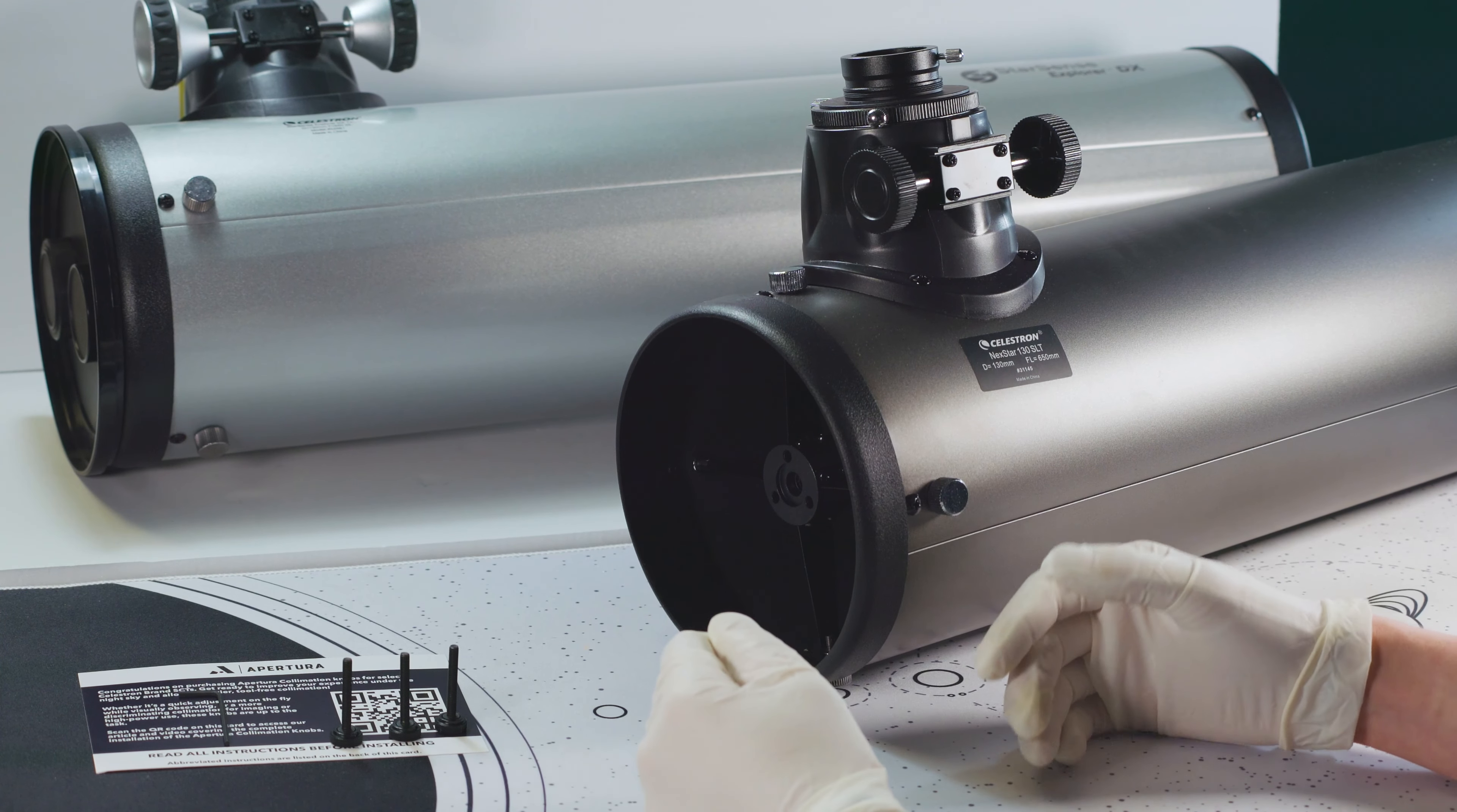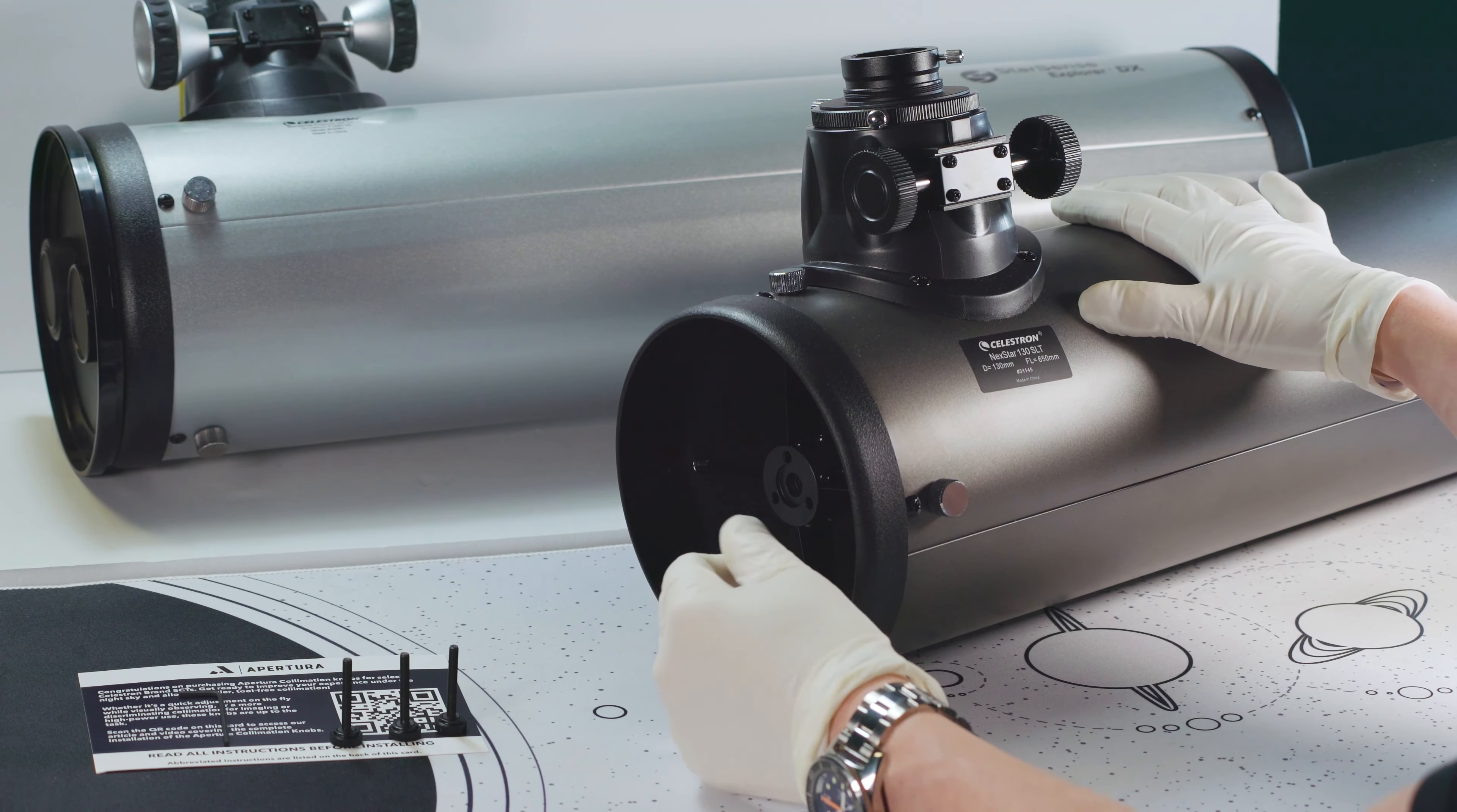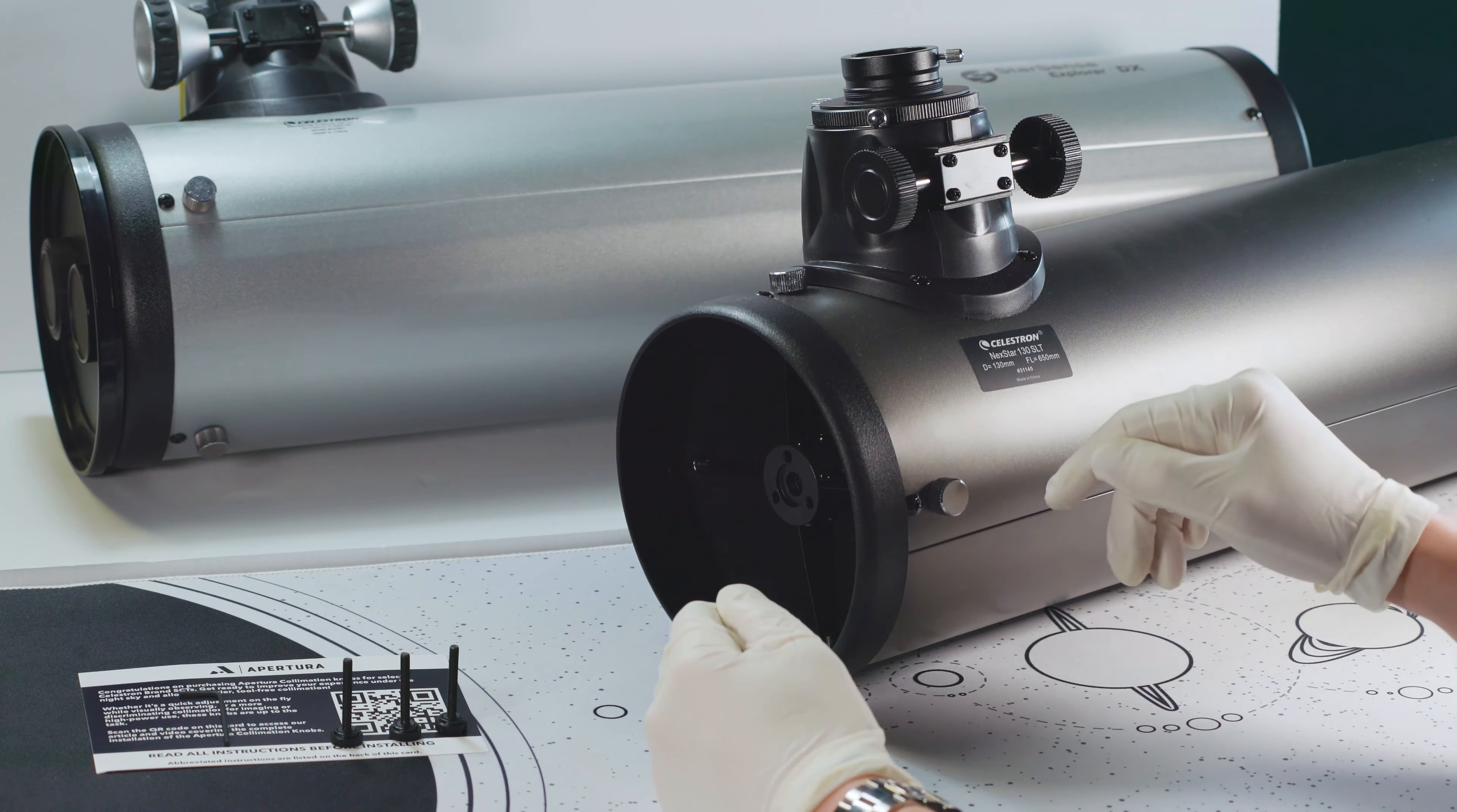Number one, you want to make sure that you have a clean workspace and plenty of light so that you can see what you're doing. Next, you want to have the scope as horizontal as possible so that either when you're removing one of the stock screws or installing one of the replacement knobs, if you drop something it doesn't fall down into the scope and either hit the mirror or get stuck down in here somewhere.